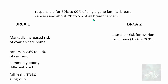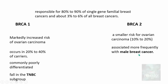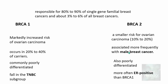BRCA2 is also associated with a smaller risk of ovarian cancer — around 10 to 20 percent — compared to BRCA1. BRCA2 gene mutations are more frequently associated with male breast cancer. BRCA2-associated cancers are also poorly differentiated but are more often ER-positive, meaning they fall under the luminal type, whereas BRCA1 mutations fall in the triple-negative subtype.